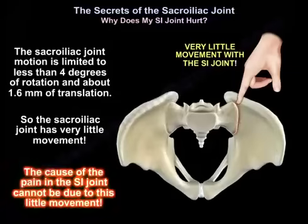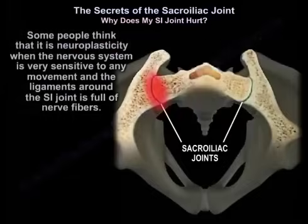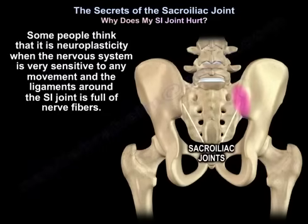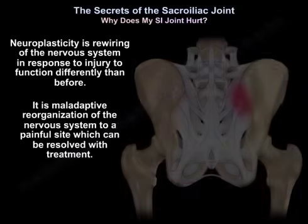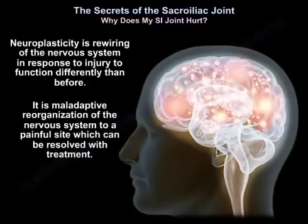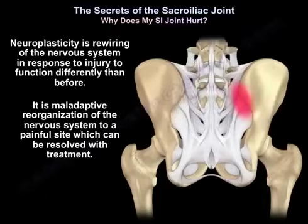The cause of SI joint pain cannot be this little movement. Some people think it is neuroplasticity, where the nervous system is very sensitive to any movement, and the ligaments around the sacroiliac joint are full of nerve fibers. Neuroplasticity is a rewiring of the nervous system in response to injury to function differently than before — a maladaptive reorganization to a painful site, which can be resolved with treatment.